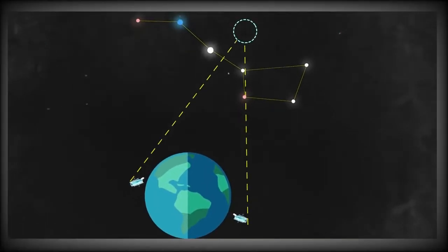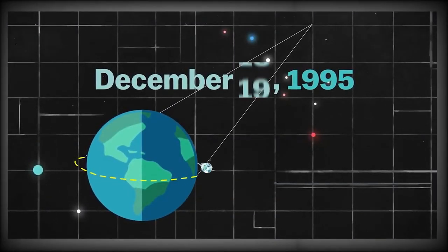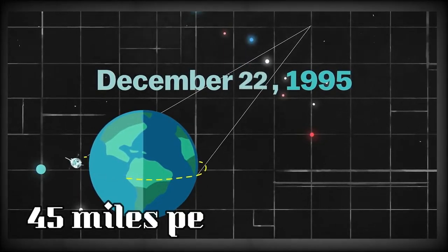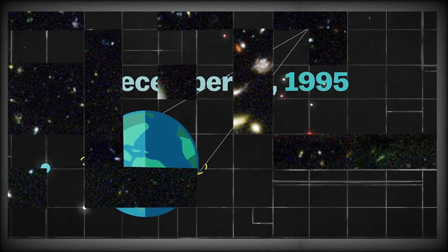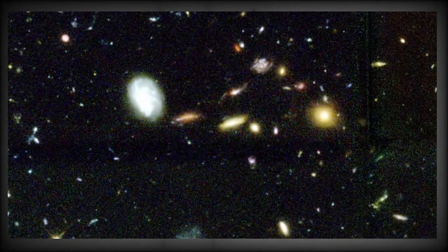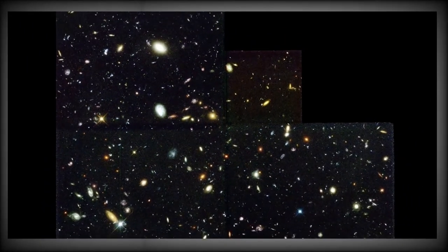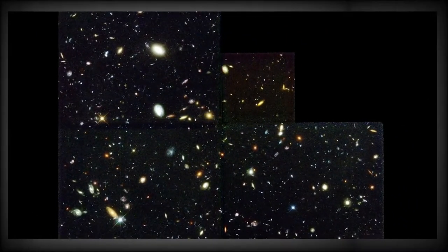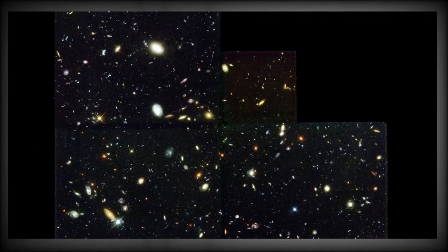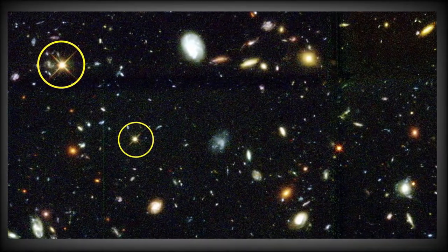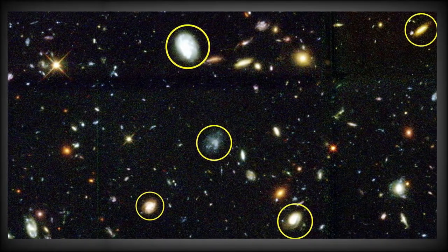The new study confirms that previous Hubble-based expansion rate estimates revealing an expansion rate of about 45 miles per megaparsec. Note that a megaparsec is a unit of measurement equivalent to 1 million parsecs or 3.26 million light-years. Given the large Hubble sample size, there is only a one in a million chance astronomers are wrong due to an unlucky draw, a common threshold in physics for taking a problem seriously.